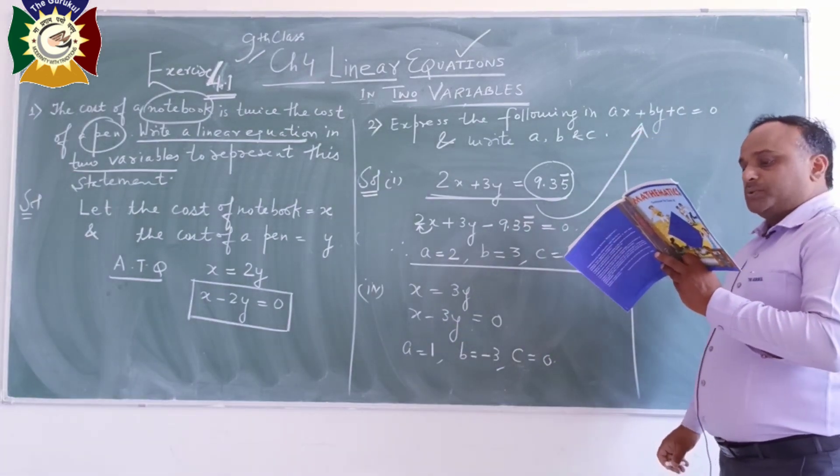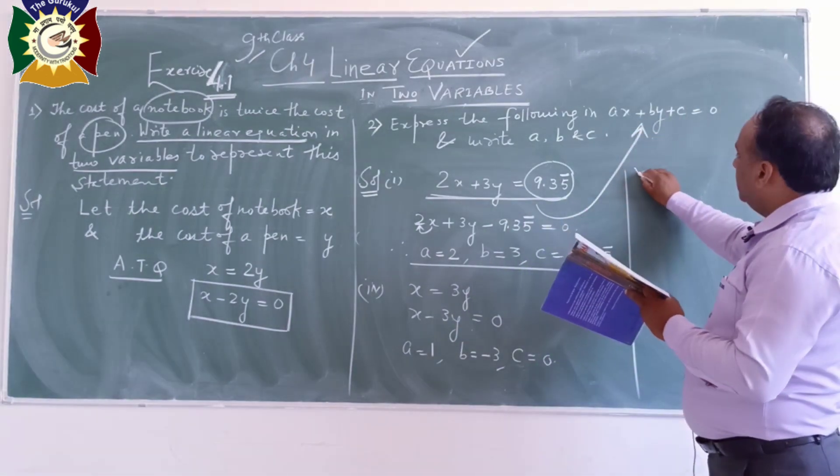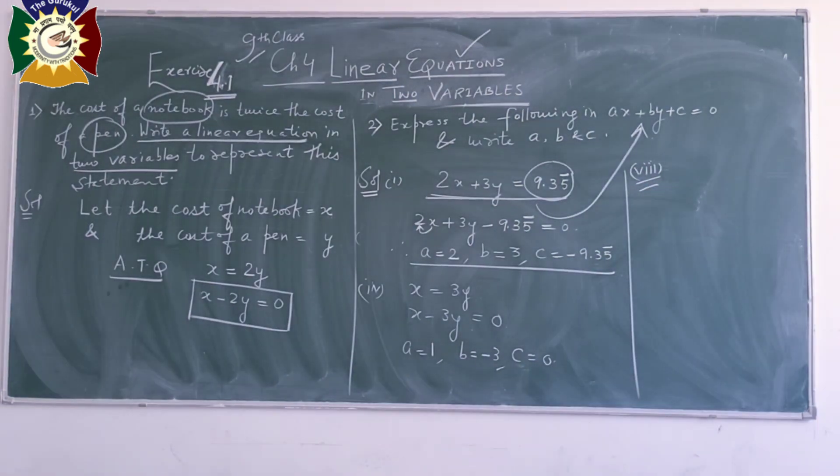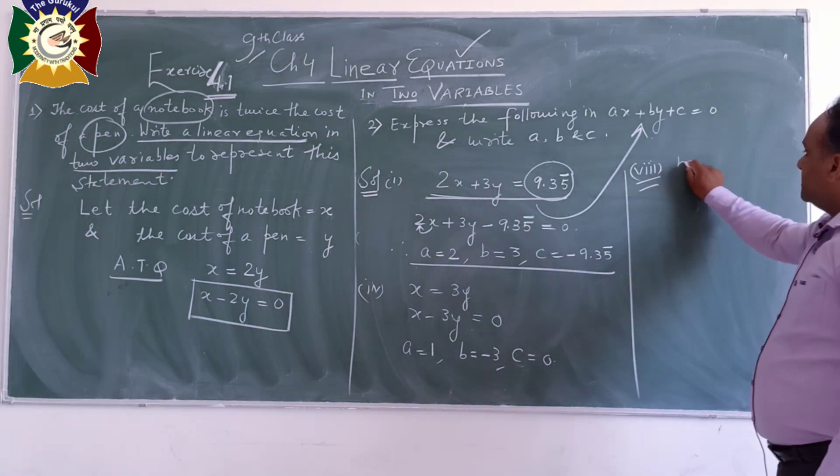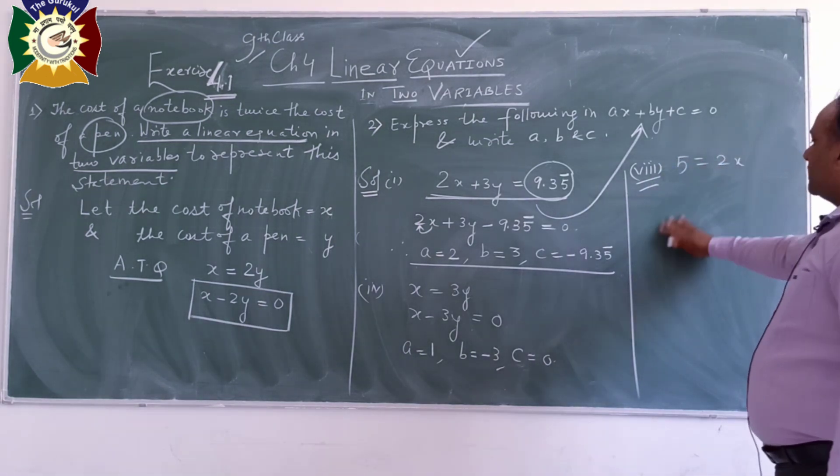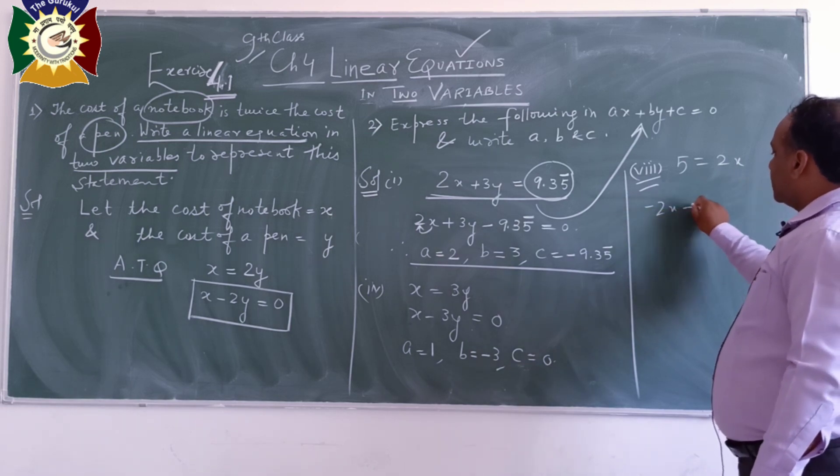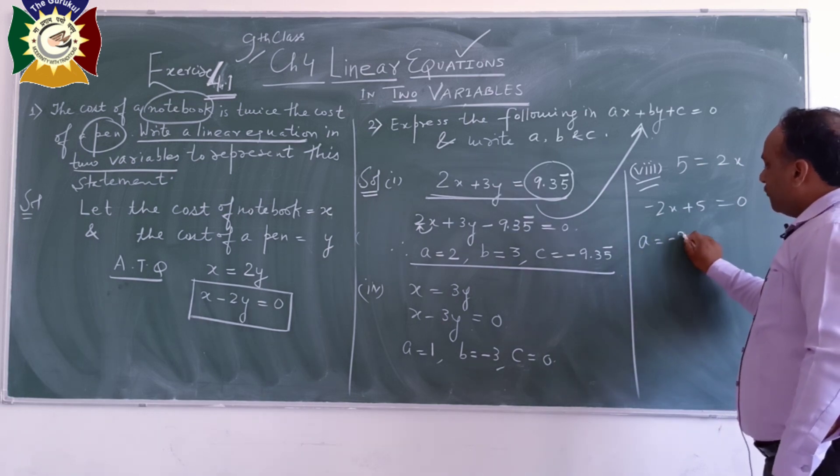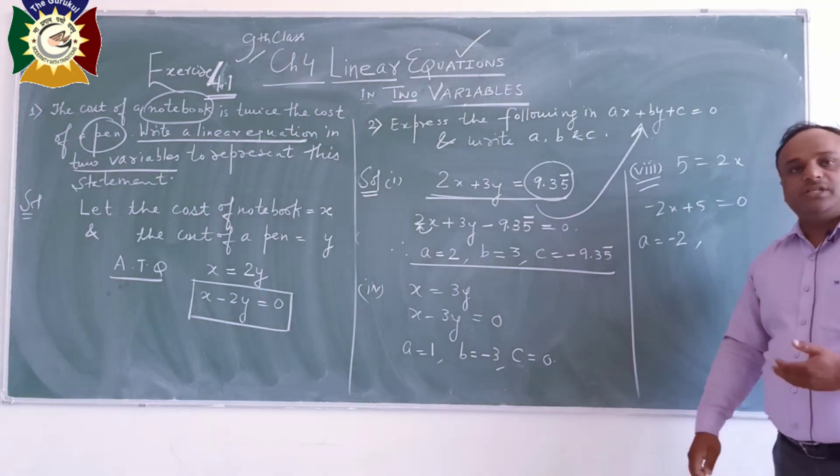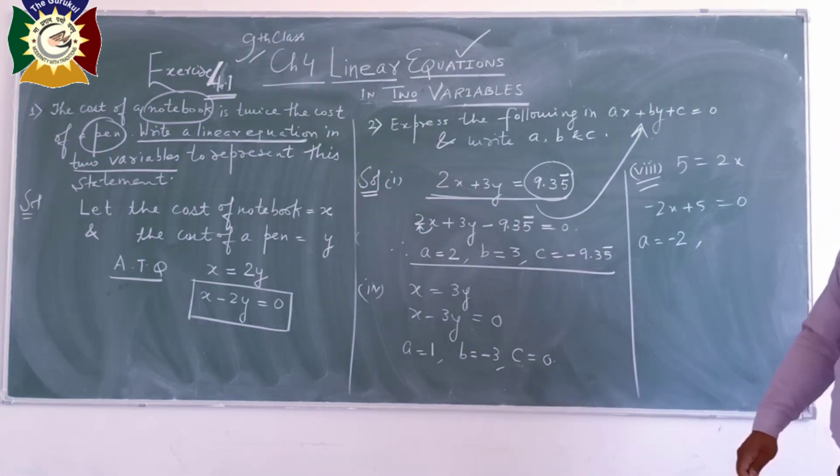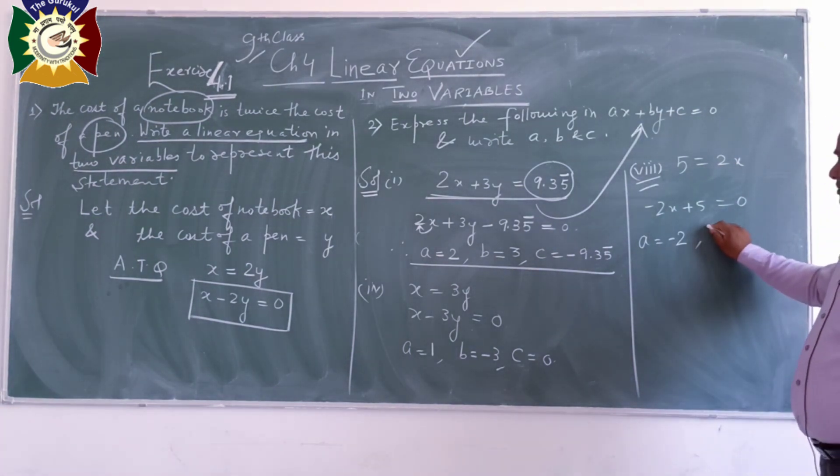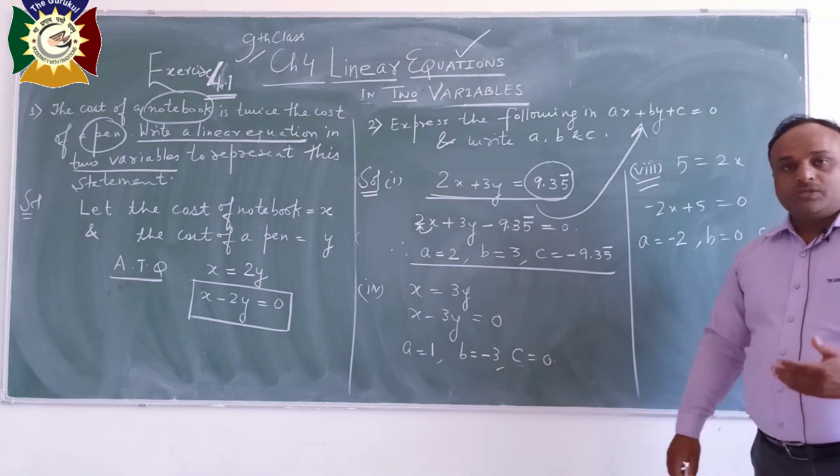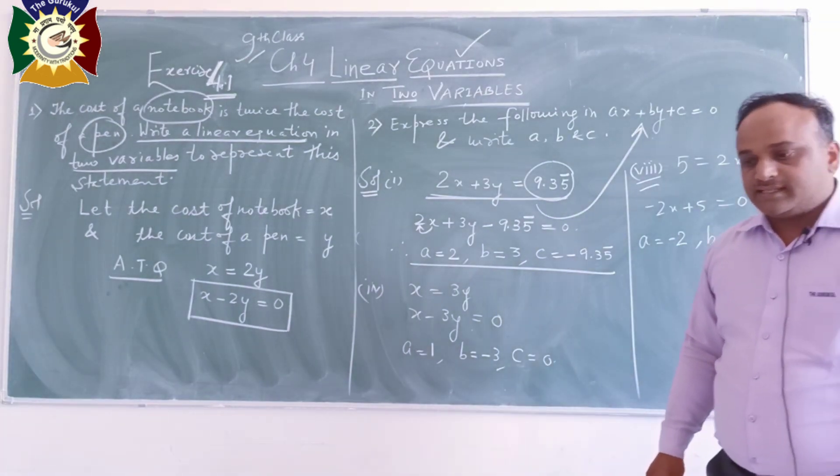Let's move to the last part. And all other parts you can do by observing these examples. 5 is equal to 2x. So how can we write? We can write minus 2x plus 5 is equal to 0. So what is A? Coefficient of x, minus 2. And Y is not in this equation. So it means that coefficient of Y will be 0. So B is equal to 0 and C is equal to 5. So this is the first exercise we have discussed. Now we move to the second exercise.